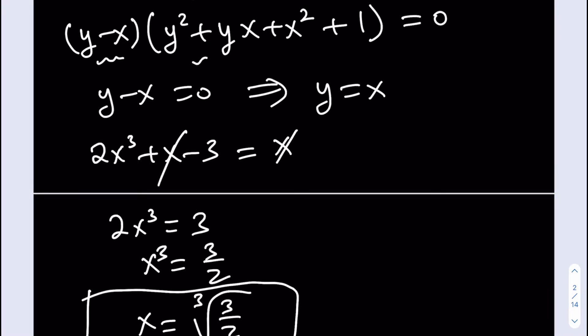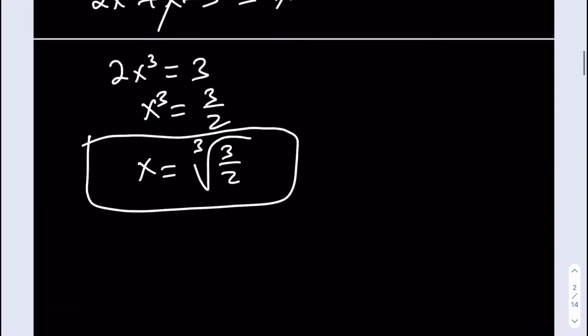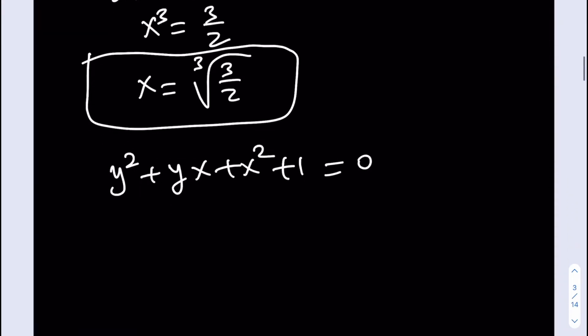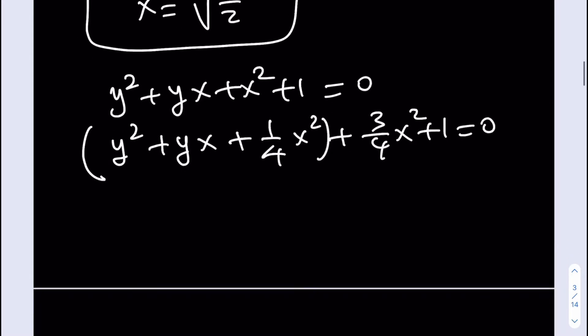What about the other ones? The other solutions are supposed to come from here. So we get y²+yx+x²+1=0. How am I going to solve this equation? There are two variables. Well, this is a quadratic. So I can just complete the square. You can write it as y²+yx+¼x²+¾x²+1. We can separate this part because that equals (y+½x)²+¾x²+1, and the sum equals 0.